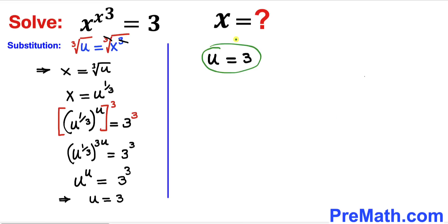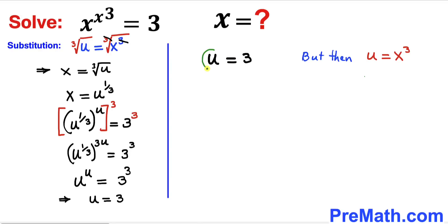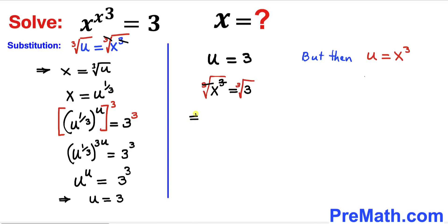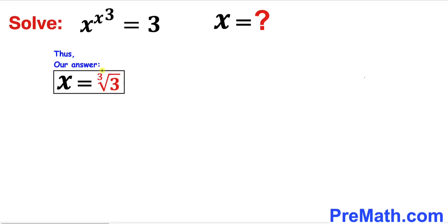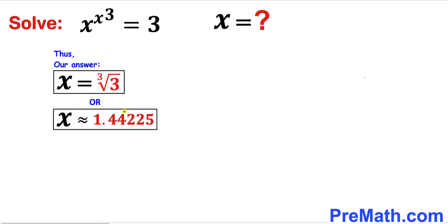Our u value turns out to be equal to 3. But we started with the substitution u equals to x power 3, so I'm going to plug it back — replacing u with x power 3. So therefore x power 3 equals to 3. Now I'm going to undo this cube by taking a cube root on both sides. The cube and cube root undo each other, so therefore our x value finally turns out to be equal to the cube root of 3, which is approximately equal to 1.44225. That's our final answer.